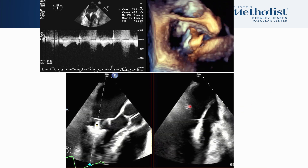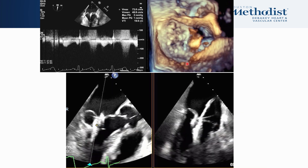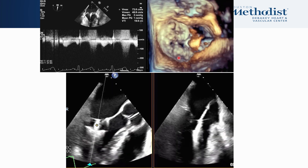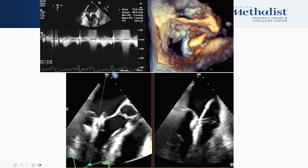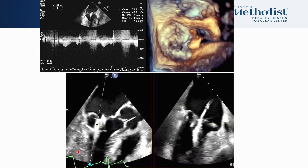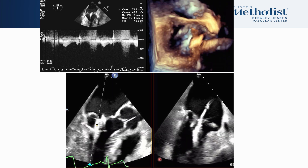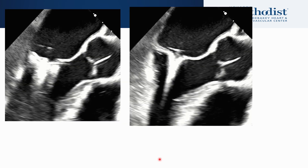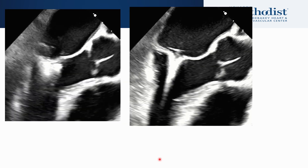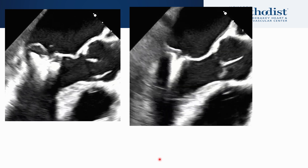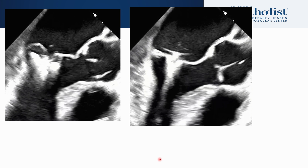We then bring in a second clip — also an XTW clip — oriented more in a 12 o'clock to 6 o'clock orientation, perpendicular to the line of coaptation. The corresponding 2D long axis views demonstrate the clip underneath the mitral valve. Carefully, the clip is retracted and the anterior and posterior leaflets are grasped. You can see the grippers are bouncing, indicating the leaflets are between the gripper and the clip arms. The clip is closed, demonstrating a good grasp.